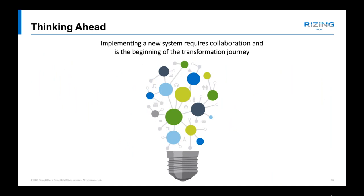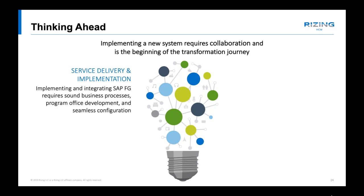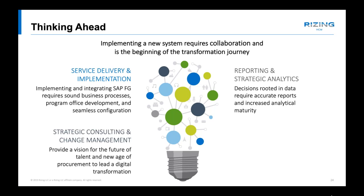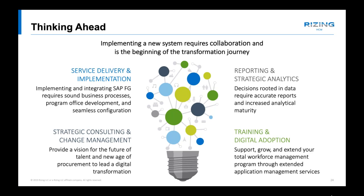Implementing a new system is challenging, but the true measure of success of any project is not the go-live — that's just a milestone. The true measure is how the business can be transformed. To be successful, consider: service delivery and implementation — ensure business processes are in line and proper project staffing is in place. Reporting and strategic analytics — begin with the end in mind and determine what analytics will be needed. Strategic and change management — determine the long-term vision and the design change of your organization, leading to the training needed. We always recommend a digital adoption solution that provides in-context help as users transact and navigate in the system.